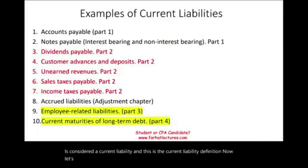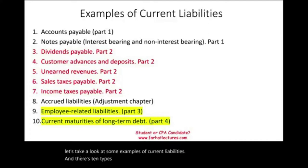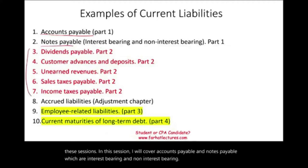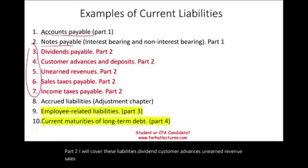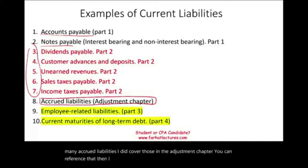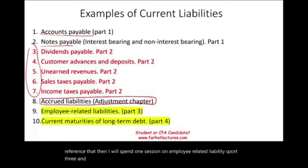Let's take a look at some examples of current liabilities — 10 types that we're going to cover in these sessions. In this session, I will cover accounts payable and notes payable, both interest-bearing and non-interest-bearing. Part two will cover dividends, customer advances, unearned revenue, sales taxes payable, and income taxes payable. Accrued liabilities are covered in the adjustment chapter. Part three covers employee-related liabilities, and part four covers current liabilities of long-term debt.